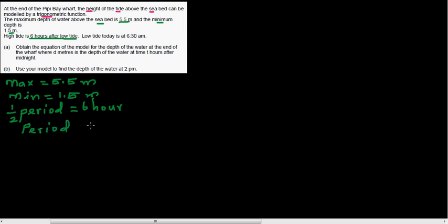This is basically enough to write the equation of the trig graph. One more piece of information: the low tide is at 6:30 am. We want to obtain the equation of the model for the depth of water, where d in meters is the depth of water and t in hours is time after midnight.